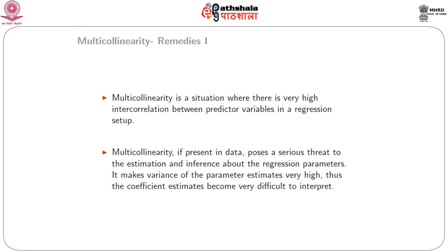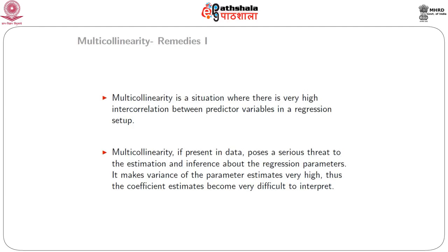We end up with a very small value of the t-statistic, which is given by the estimate of the parameter divided by the standard error. Because the standard error is very high, it gives us a very small value for the t-test statistic. But do we need to take care of multicollinearity?